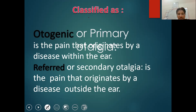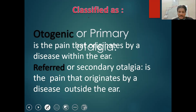The second classification is referred otalgia, when the pain originates from structures around the ear or surrounding structures. So primary otalgia is pain originating from the ear itself, whereas secondary or referred otalgia is when the pain originates outside the ear from the surrounding structures.